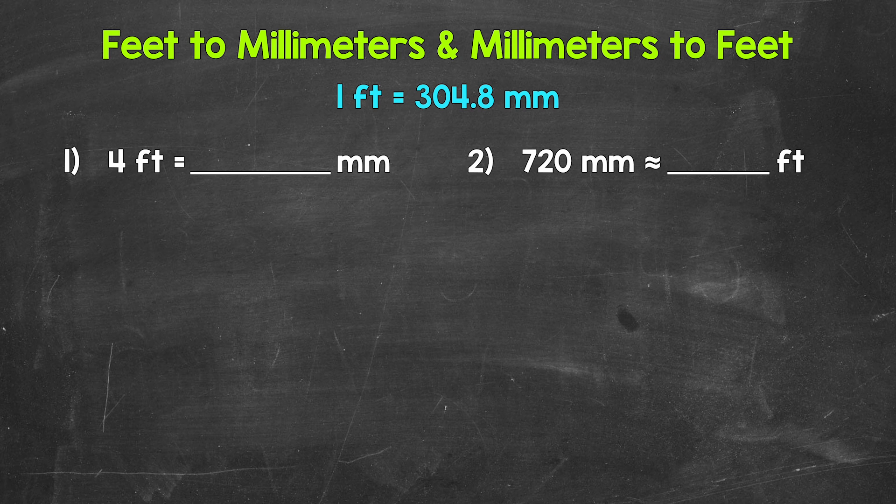To start, there are 304.8 millimeters in a foot. In other words, one foot equals 304.8 millimeters. Let's jump into a couple of conversions where we will go from feet to millimeters and millimeters to feet.